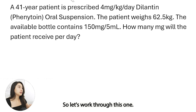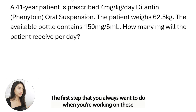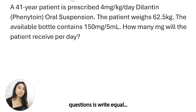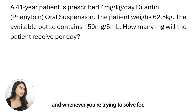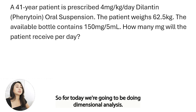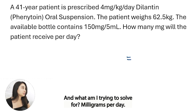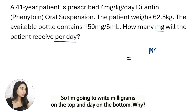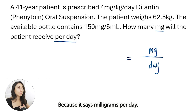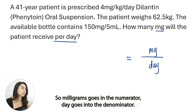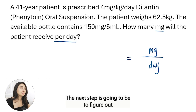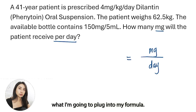The first step you always want to do when working on these questions is write equals and whatever you're trying to solve for. For today, we're going to be doing dimensional analysis. So step one, I'm going to write equals. What am I trying to solve for? Milligrams per day. So I'm going to write milligrams on top and day on the bottom, because it says milligrams per day — that's what I need to solve for. Milligrams goes in the numerator, day goes into the denominator. The next step is figuring out what I'm going to plug into my formula.